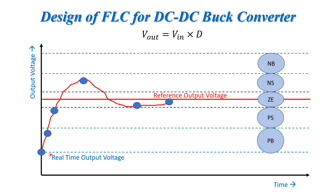So one more rule: if the error is positive big, then a very large duty cycle is required to bring the system to the desired value. Similarly, if the system is very near to the reference output voltage, we don't need to provide too high a duty cycle — otherwise it can overshoot.